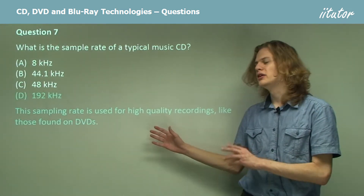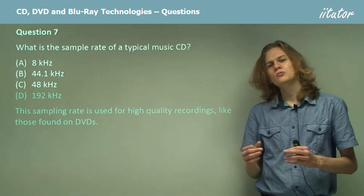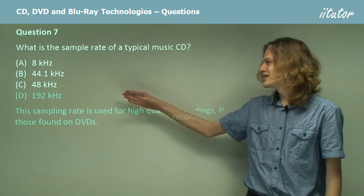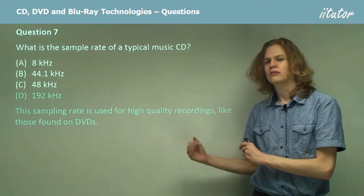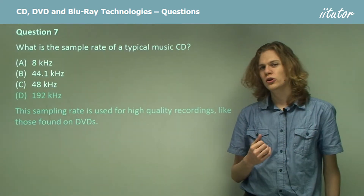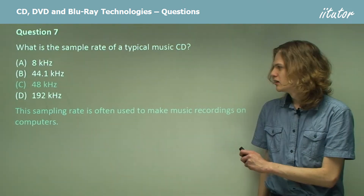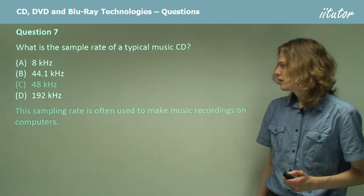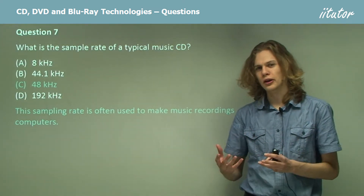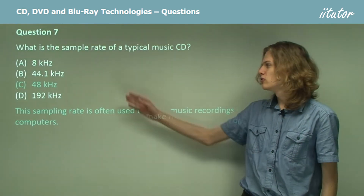192kHz is the sampling rate used by DVDs. If we sample an analog sound at this rate, we end up with very large amounts of data very quickly. If we tried to encode something at this sampling level onto a CD, the CD would find it very difficult to store all the information — we'd only be able to store a very small amount before running out of space. So how about something smaller, like 48kHz? This is often used for music recordings on computers with microphones, and it's possible to find music files on computers with a sampling rate of 48kHz.